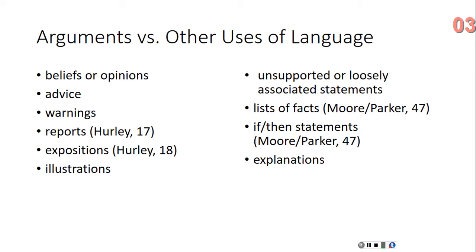Advice. If you give someone advice, you say something like, "You shouldn't take out that car loan." Just that simple piece of advice, without any other evidence — there, you haven't given an argument. You've merely stated one of your beliefs. But if you went on to lay out all the reasons why the person shouldn't take out the car loan, then you might be giving an argument. "You shouldn't take out the car loan because of such and such a reason" — now that's an argument. Just as a belief and an opinion can factor into part of an argument, so can advice.